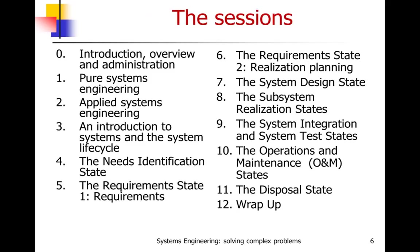There are 13 sessions, starting with the introduction and overview. Then I go into pure systems engineering and applied systems engineering. Then an introduction to system and the system lifecycle. The rest of the course covers what systems engineers do in the different states of the system lifecycle: needs identification, requirements — covered in two sessions, one for requirements and one for realization planning — design, subsystem realization, systems integration and system test, operations and maintenance, and disposal states. Most courses focus only on system development, generally from session five through session nine, so this is a broader class.